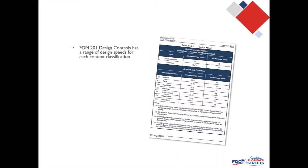This chapter is designed to support FDM 201, which is our design controls chapter. Within FDM 201 you'll find a table with a range of design speeds assigned to each context classification. FDM 202 is designed to support FDM 201 by providing techniques to actually achieve those speeds in the lower design speed ranges. For C4, C5, C6, and also C2T, we have speeds in the lower design speed range, and this chapter helps you find ways to achieve those speeds.